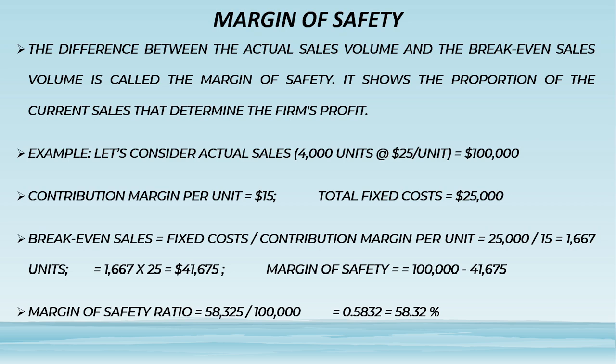Margin of Safety: The difference between the actual sales volume and the break-even sales volume is called the margin of safety. It shows the proportion of the current sales that determines the firm's profit.